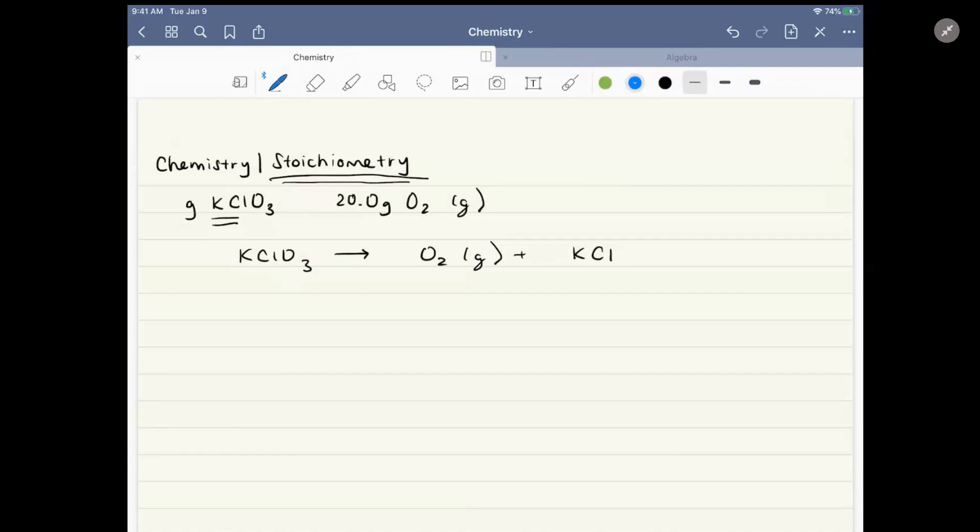So we have three oxygens on this side and two oxygens on this side. They don't really share a common factor, but we can multiply this side by three, this side by two. Now I have a balanced equation. We can check: we have six oxygens, two potassiums, two chlorines.